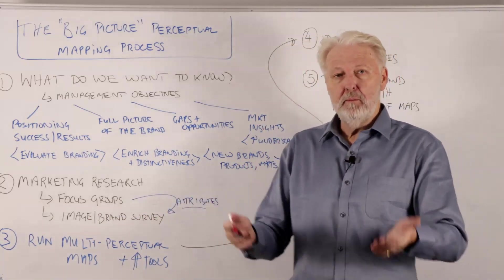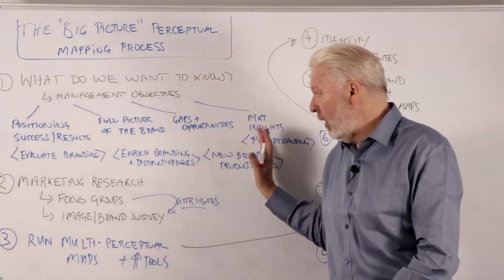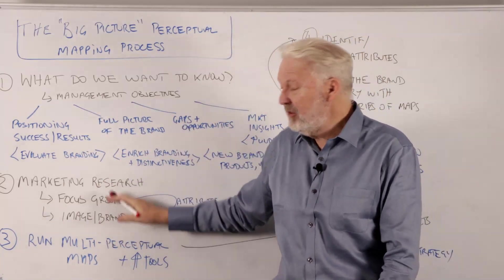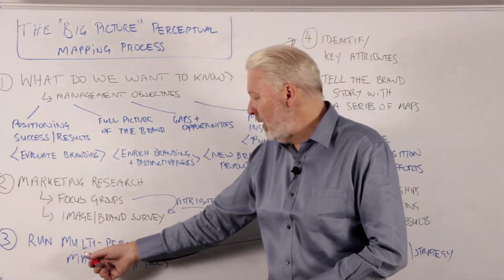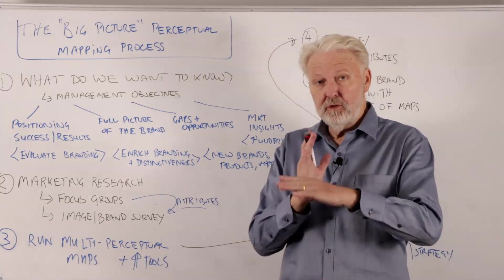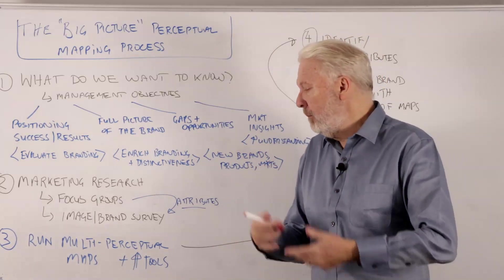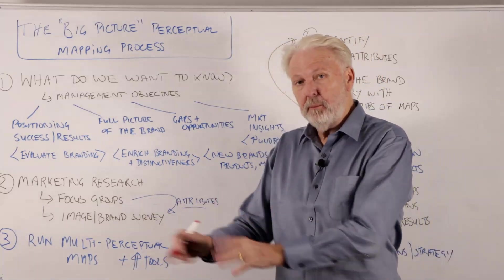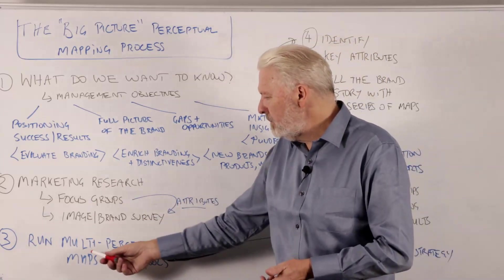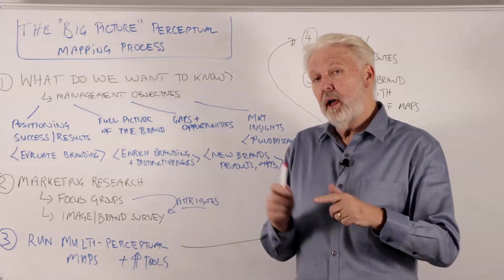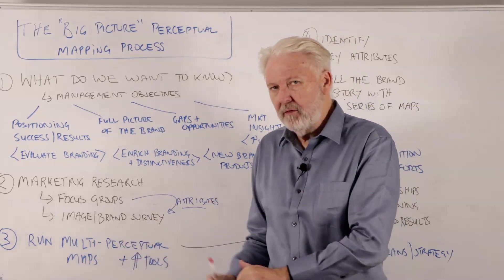We don't just pick two attributes and say, there you go, that's our positioning — because we have goals to achieve and problems to solve. This is expensive and takes time, so let's spend the time on the analysis. We actually run a whole bunch of maps, two-axis maps over and over, looking at different combinations by segments, by competitors, et cetera. I've got a separate video that goes through all the analytical side of that, and there are more than just two-axis perceptual maps — so we use different types, and again I've got another video on that.